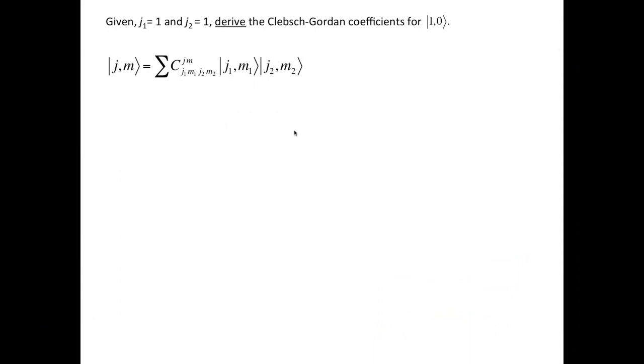What does that mean? It means that we want to write the coupled state |J,M⟩ as a linear combination of the uncoupled bases |J1,M1⟩ and |J2,M2⟩ such that M1 plus M2 is equal to M.